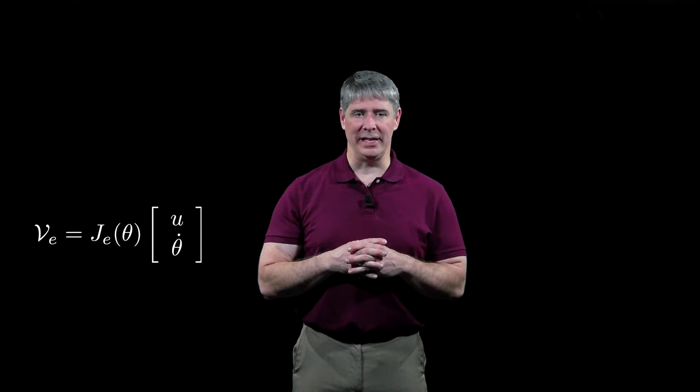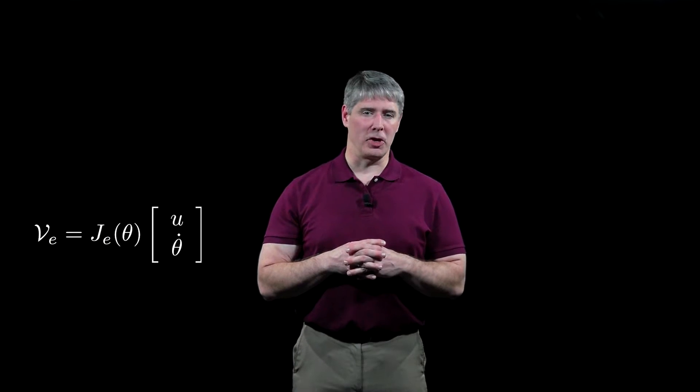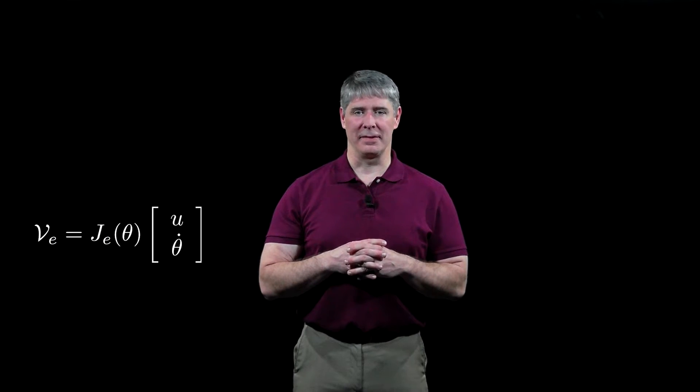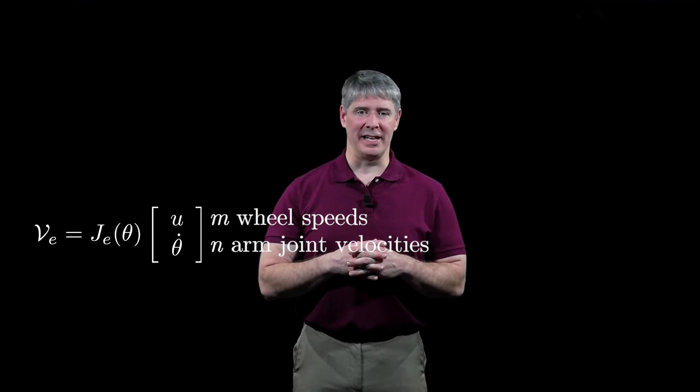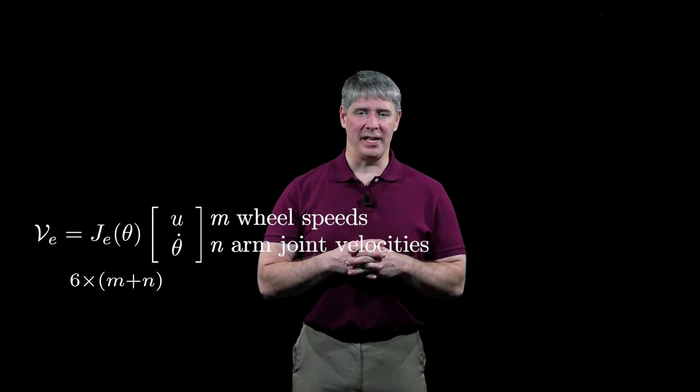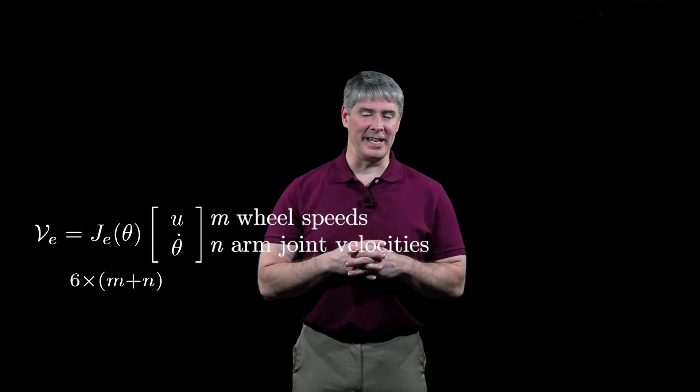With these definitions, the end effector twist VE, expressed in the end effector frame, is the Jacobian JE(θ) times the vector of wheel speeds u and joint velocities θ̇. There are m wheel speeds and n joint velocities, so JE is a 6 by m+n matrix.